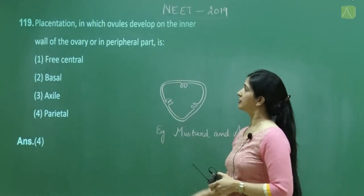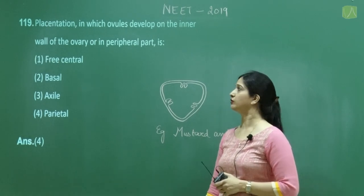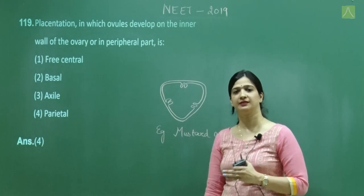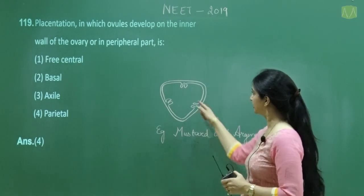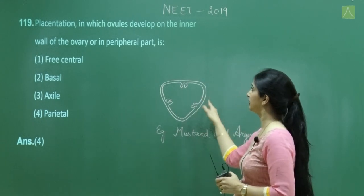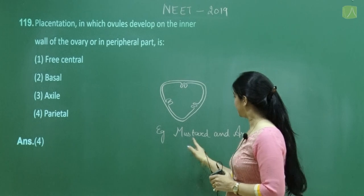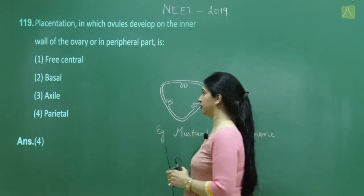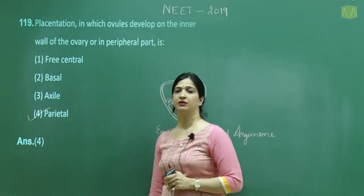Question number 119: Placentation in which ovules develop on the inner wall of the ovary or in the peripheral part. This is a direct NCERT-based question. The diagram shown is of parietal placentation, with examples being mustard and Argemone. The correct answer is option 4: parietal placentation.